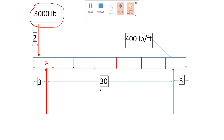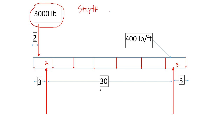Let's say this point is A and this is point B — these are my two reactions. Step number one is to draw the free body diagram, which I've already drawn, simplified to a two-dimensional problem. The dimensions are approximately three feet at the front overhang and about two feet from the front to point A.